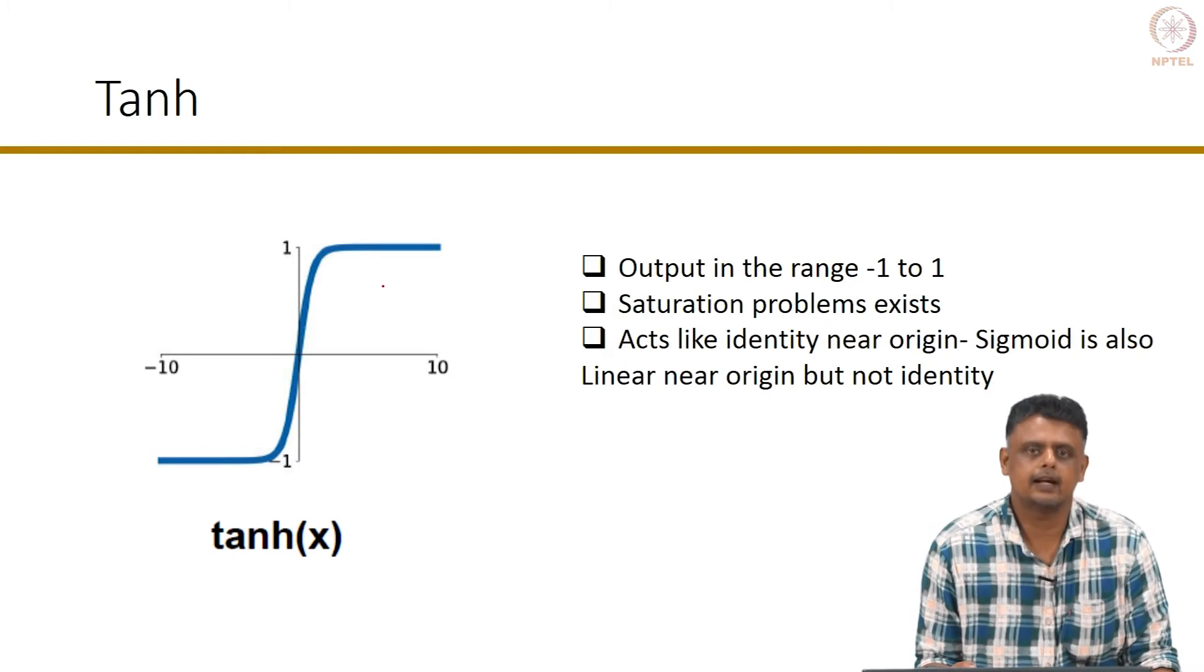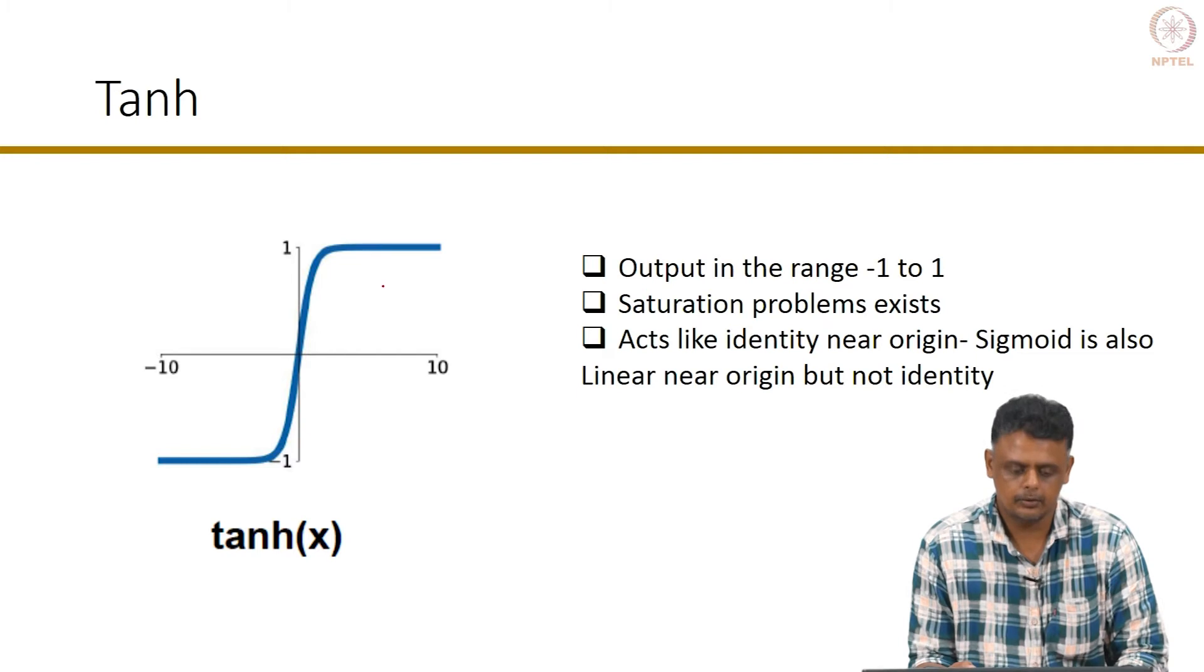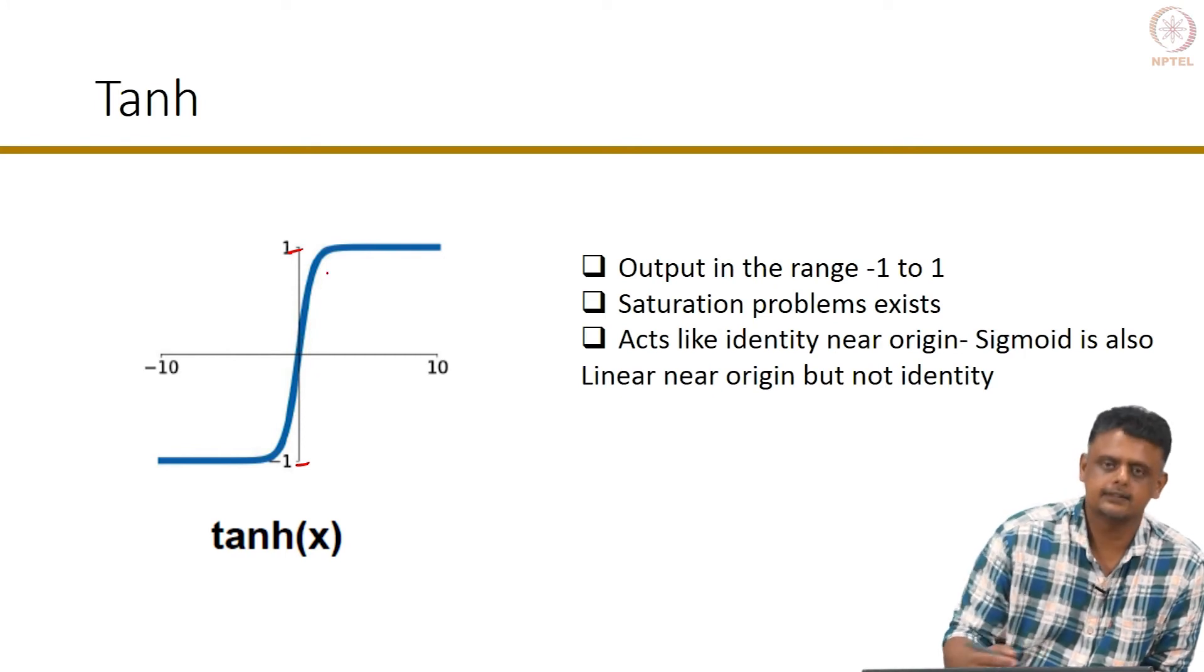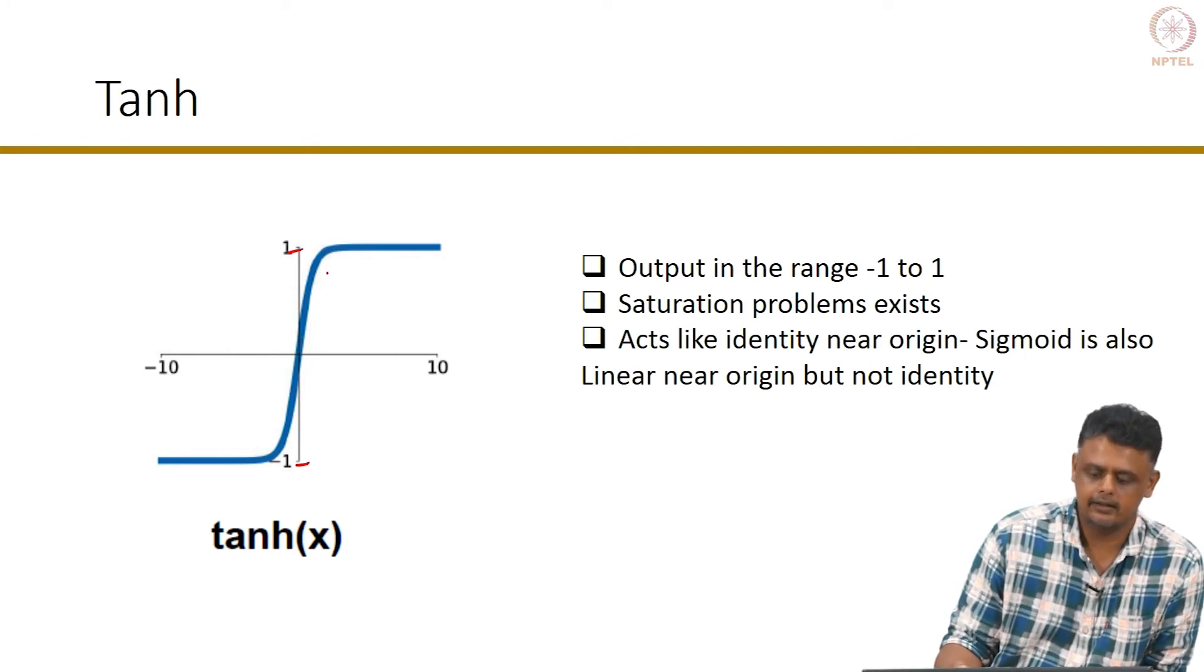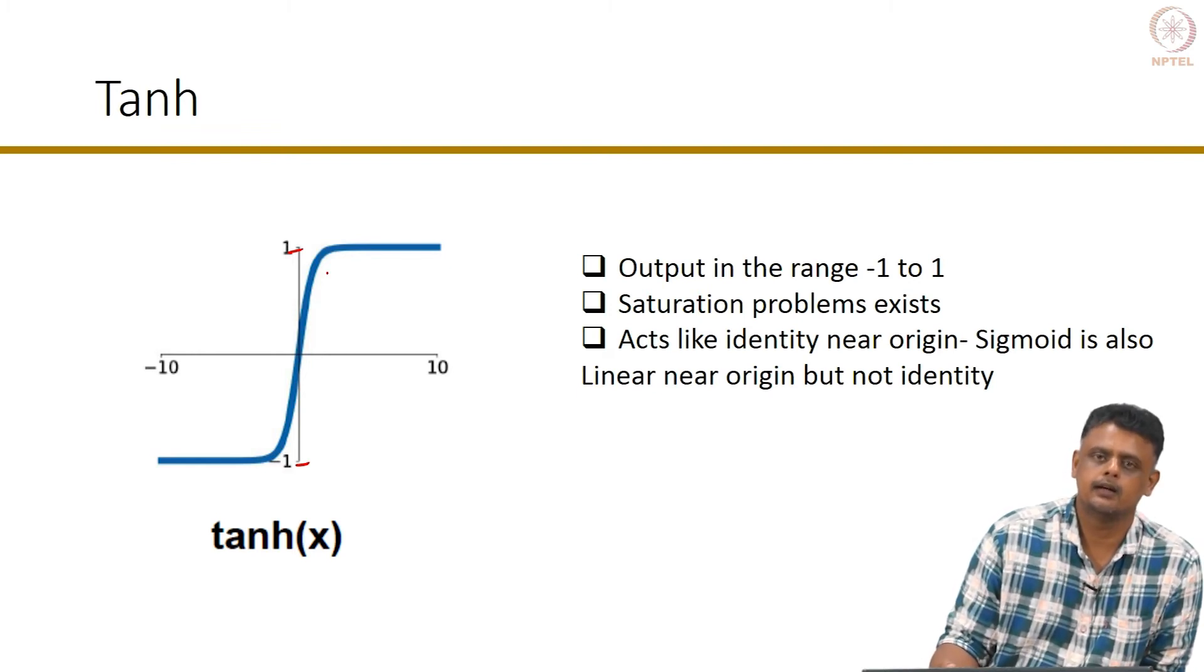The tan hyperbolic function is again one of the activation functions that are often used. It is one of the earliest functions to be used, and here the range of this function is between minus 1 and 1. Here too, saturation problems exist, and it acts like an identity in the sense it is linear near the origin, unlike the sigmoid function. This is also preferred for certain types of problems, and saturation problems here again means that the gradient with respect to the input argument goes to 0, which means that weights will not get updated.